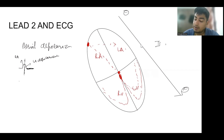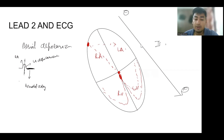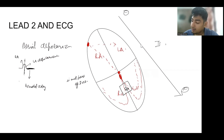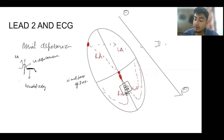After the P wave, we have the PR segment, which represents the AV nodal delay. When the impulse travels through the bundle of His and bundle branches, the first part to be depolarized in the ventricle is the mid part of the interventricular septum. This septal depolarization occurs because of the left bundle branch firing. This depolarization is from below upwards and towards the right, so we get a negative wave in lead 2 — this is the Q wave.